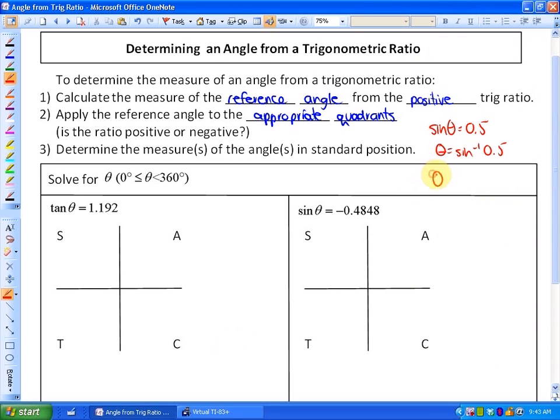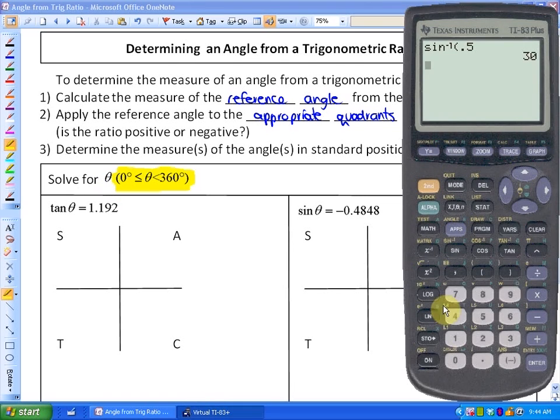However, in this particular unit or chapter, what we're going to be doing is solving for all of the angles between 0 and 360 degrees. So we're not just looking for answers between 0 and 90. For example, another possible angle that would work is 150 degrees because sine of 150 also has a sine ratio of 0.5.